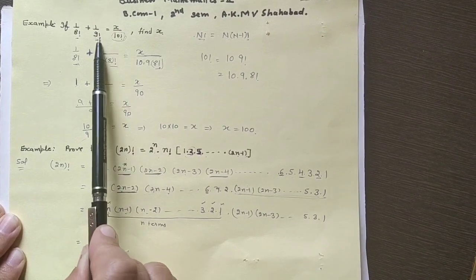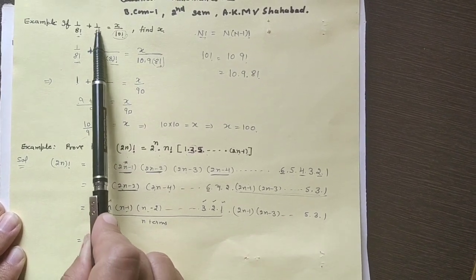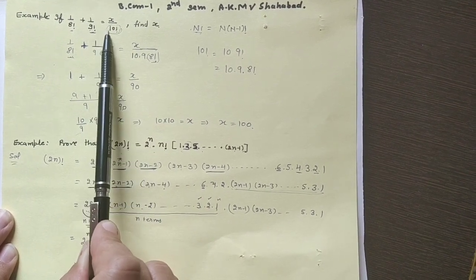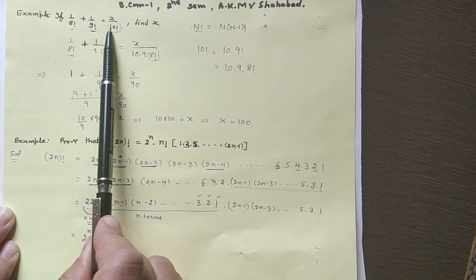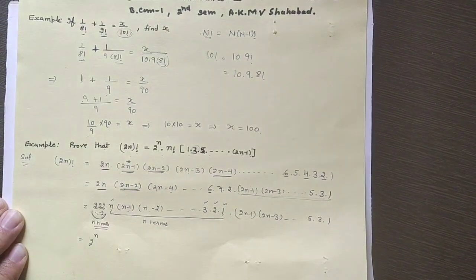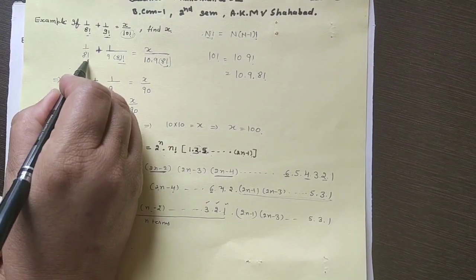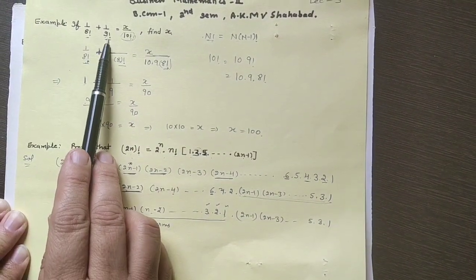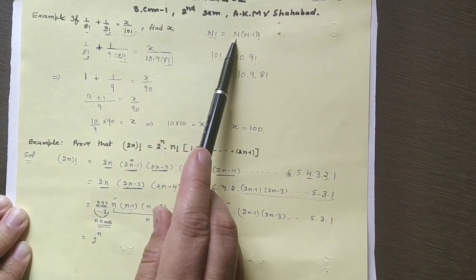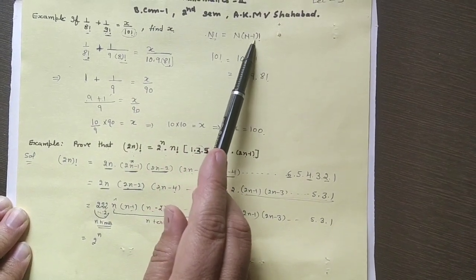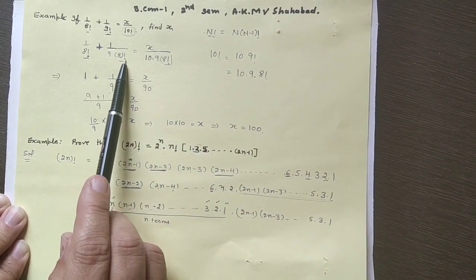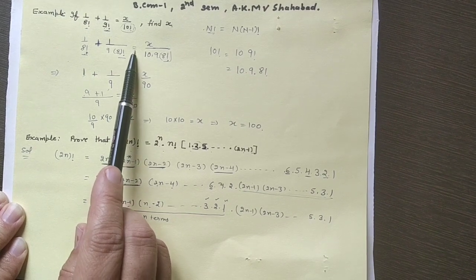We will apply the formula on 10 factorial and 9 factorial. When we expand 9 factorial, we get 9 into 8 factorial. So we cancel 8 factorial. Taking 1 by 8 factorial as it is, plus 1 by 9 factorial, we write 9 factorial as 9 into 8 factorial.